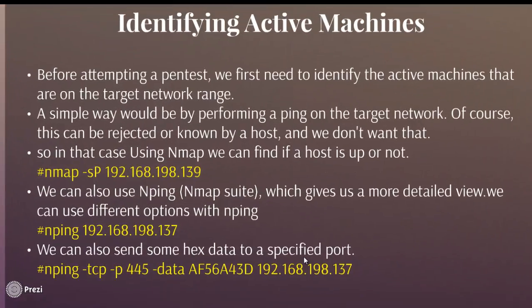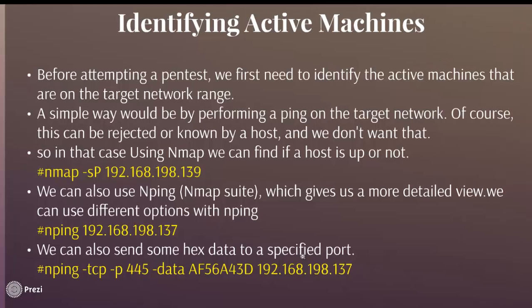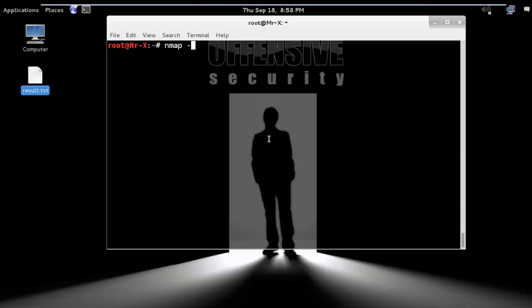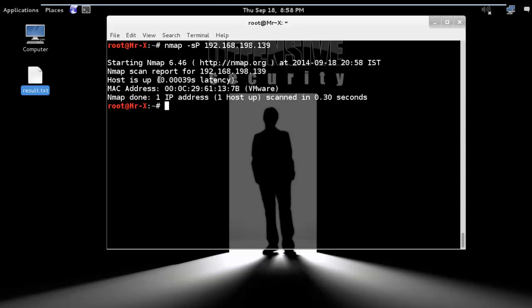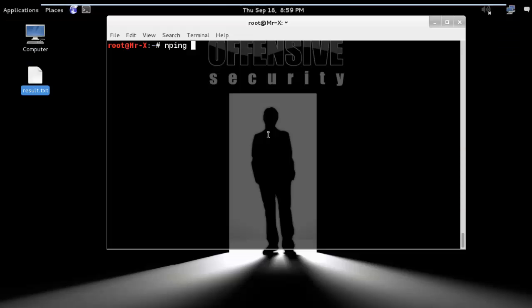Identifying active machines: before attempting a pen test, we first need to identify the active machines on the target network range. A simple way would be by performing a ping on the target network, but of course this can be rejected or detected by the host and we don't want that. So in that case, using nmap we can find if a host is up or not. We perform a simple ping scan using nmap: nmap -sP 192.168.198.139. You can see the host is up and its MAC address. We can also use nping, which is part of the nmap suite and gives a more detailed view.